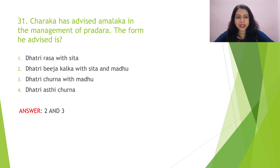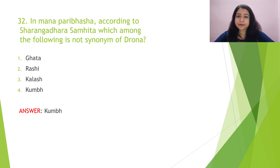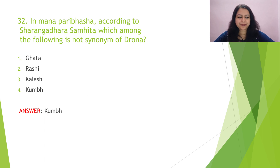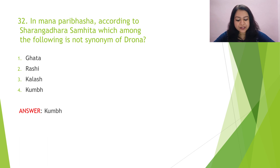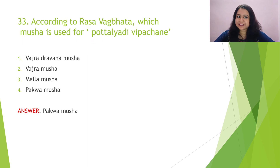Question 32, from Sharangadhara Samhita on mana paribhasha: which among the following is not a synonym of drona? The options are ghada, rashi, kalasha, and kumbha. The answer is kumbha, because kumbha is equal to two drona, whereas rashi, kalasha, etc. are synonyms of drona.